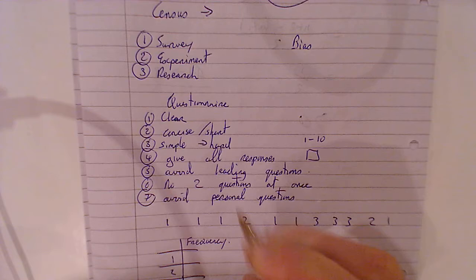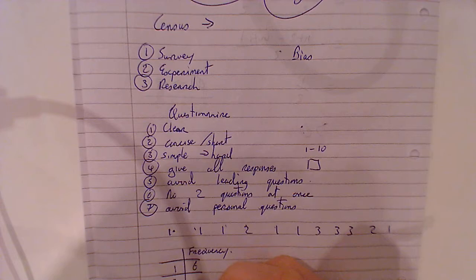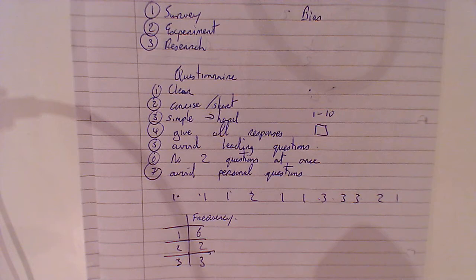How many ones do I have? 1, 2, 3, 4, 5, 6. How many twos do I have? 1, 2. How many threes do I have? 1, 2, 3. Okay? And there is our answer.